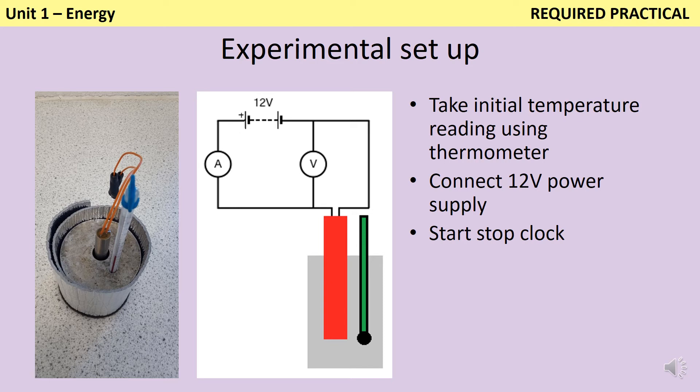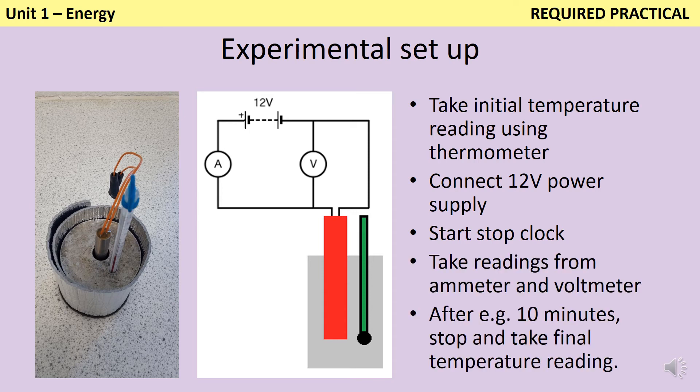Throughout the experiment, you'll take regular readings. We're only really interested in what the temperature change is at the very end of the practical, but by regularly writing down the current and the potential difference, we can take account of the fact that these might fluctuate from minute to minute. After a certain amount of time, it may be five minutes or 10 minutes, or you may judge it based on when the temperature has increased by a certain amount, you stop the clock and take a final temperature reading.